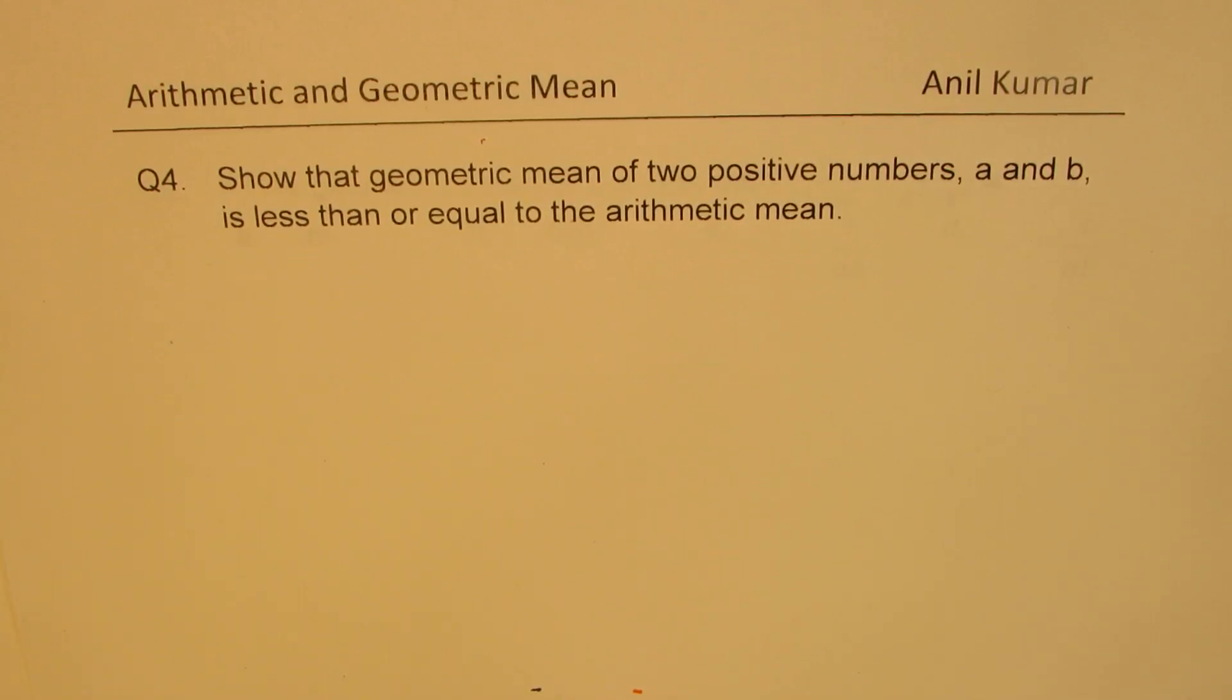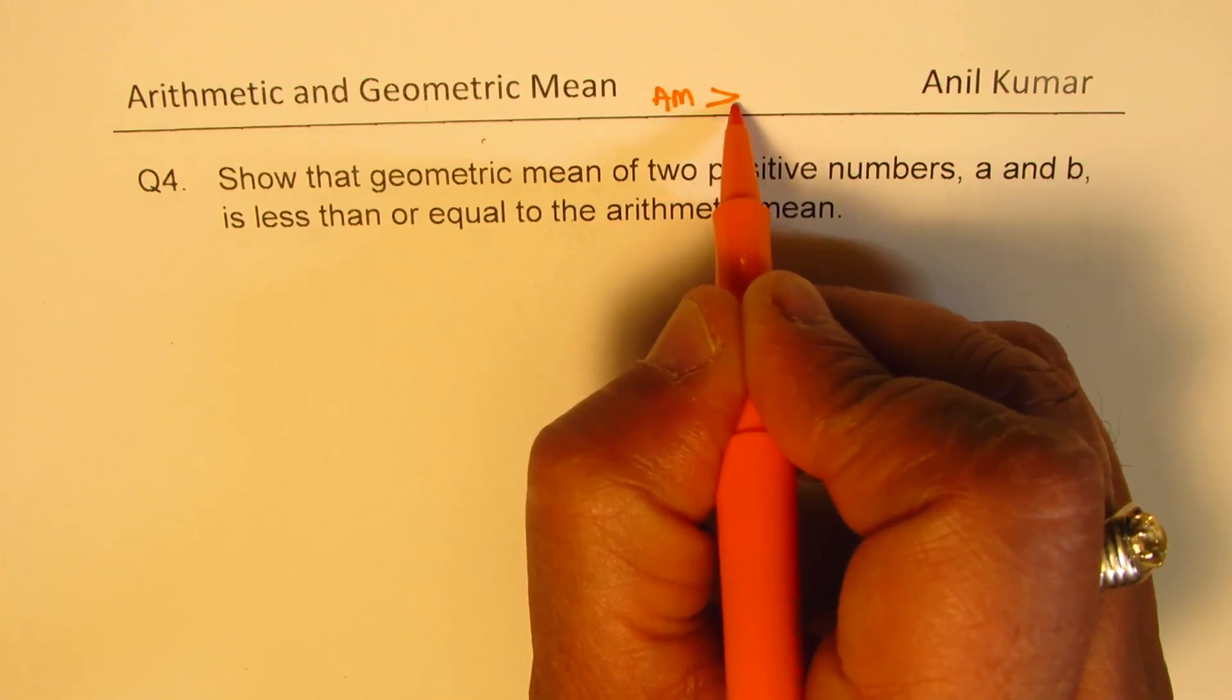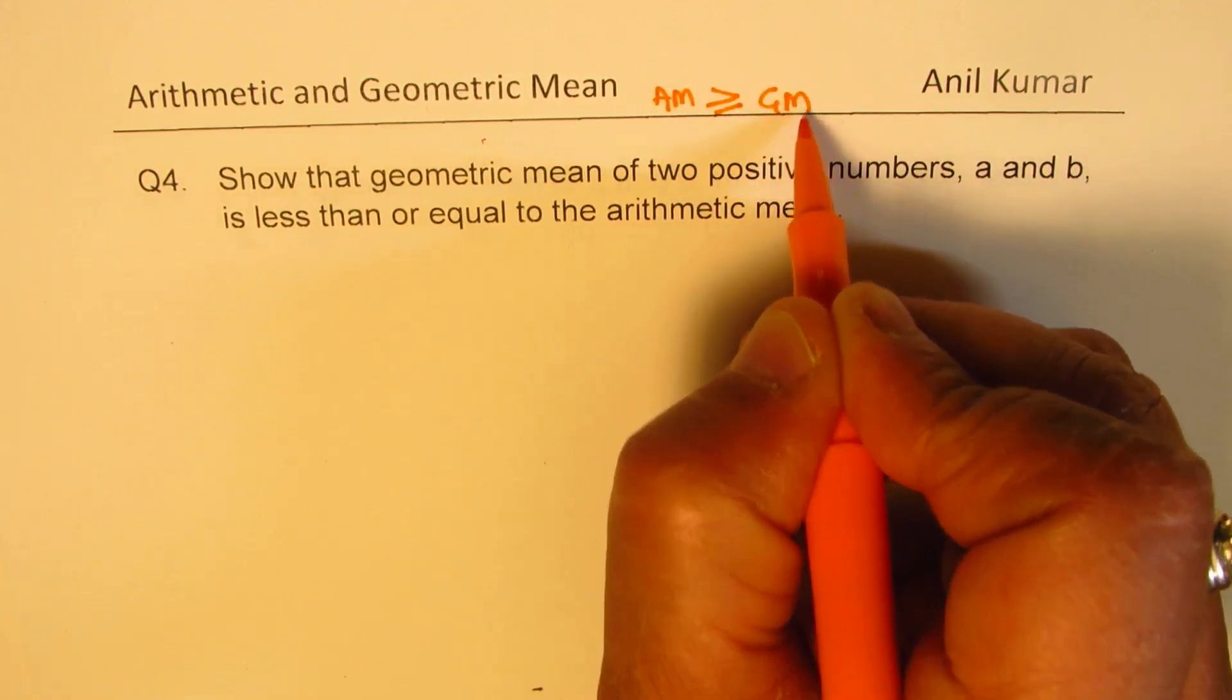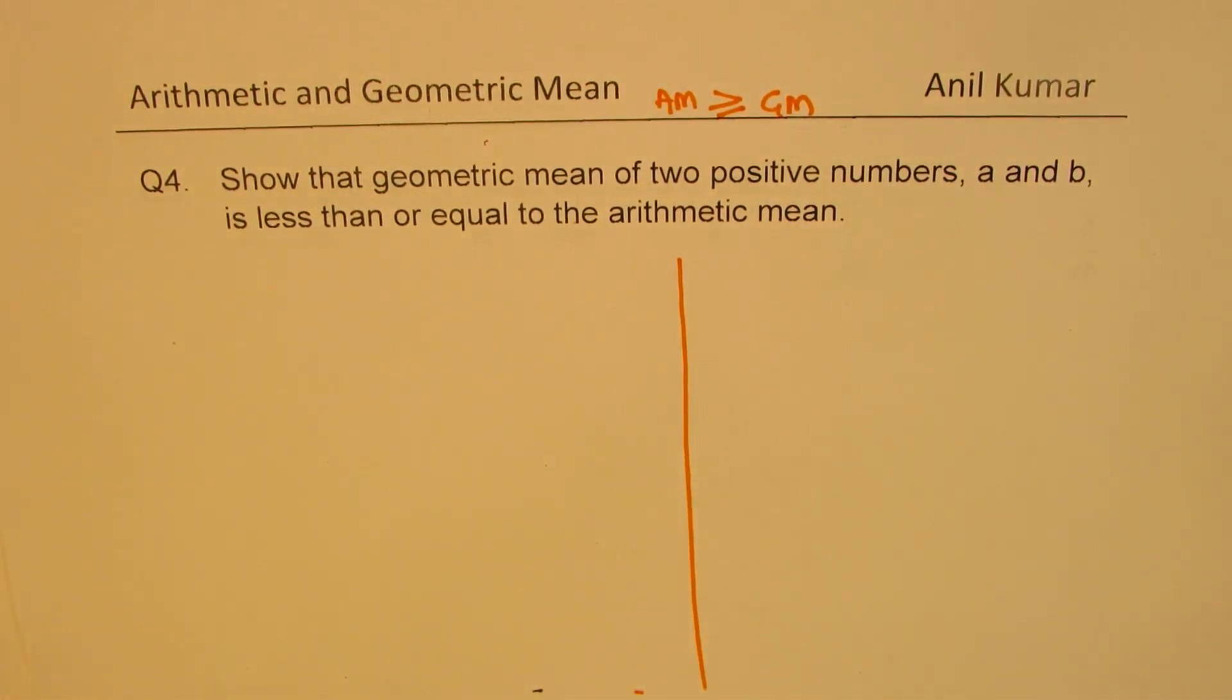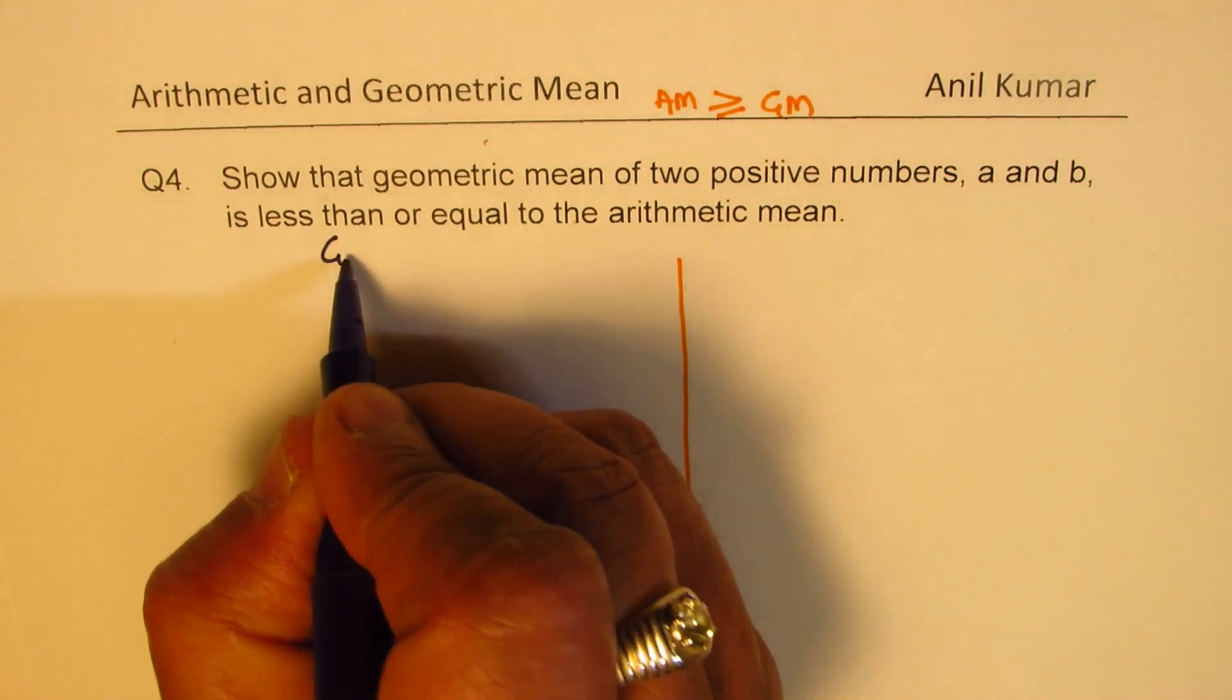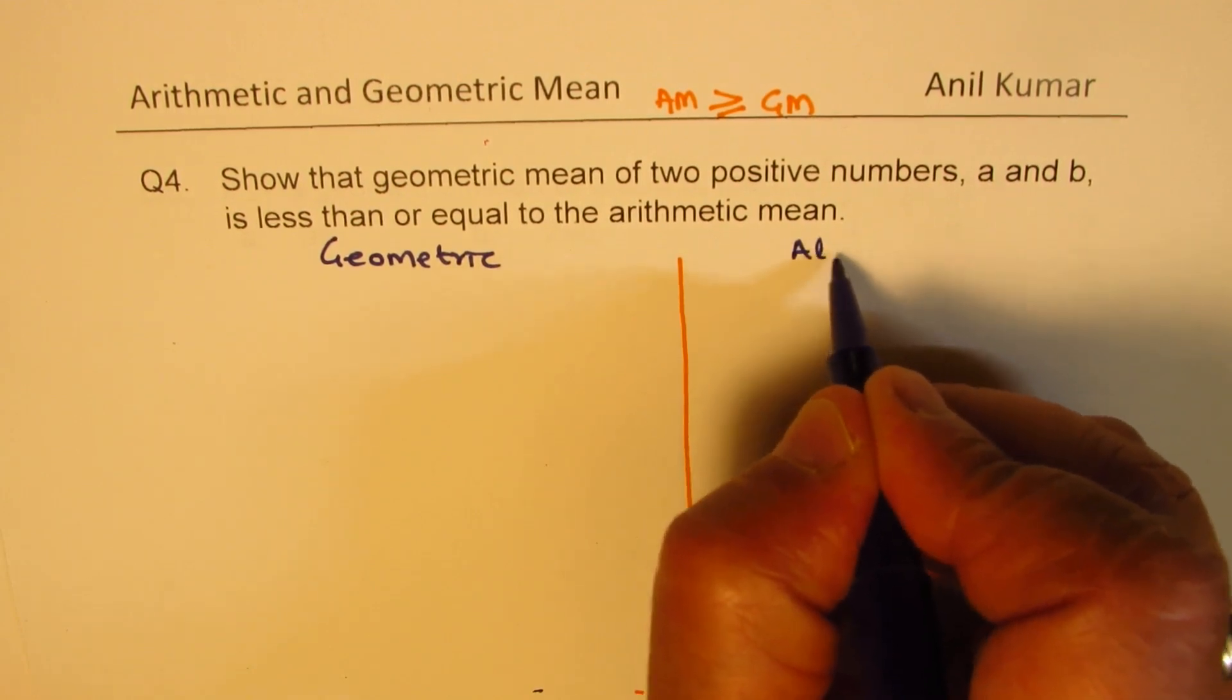I am Anil Kumar. Welcome to my series on sequences and series. One of the most important topics here is to understand arithmetic and geometric means and the relation between them. We'll look into this inequality that arithmetic mean is basically always equal to or greater than geometric mean. In this video we'll prove it using two different methods. One approach will be geometric and the other will be algebraic.